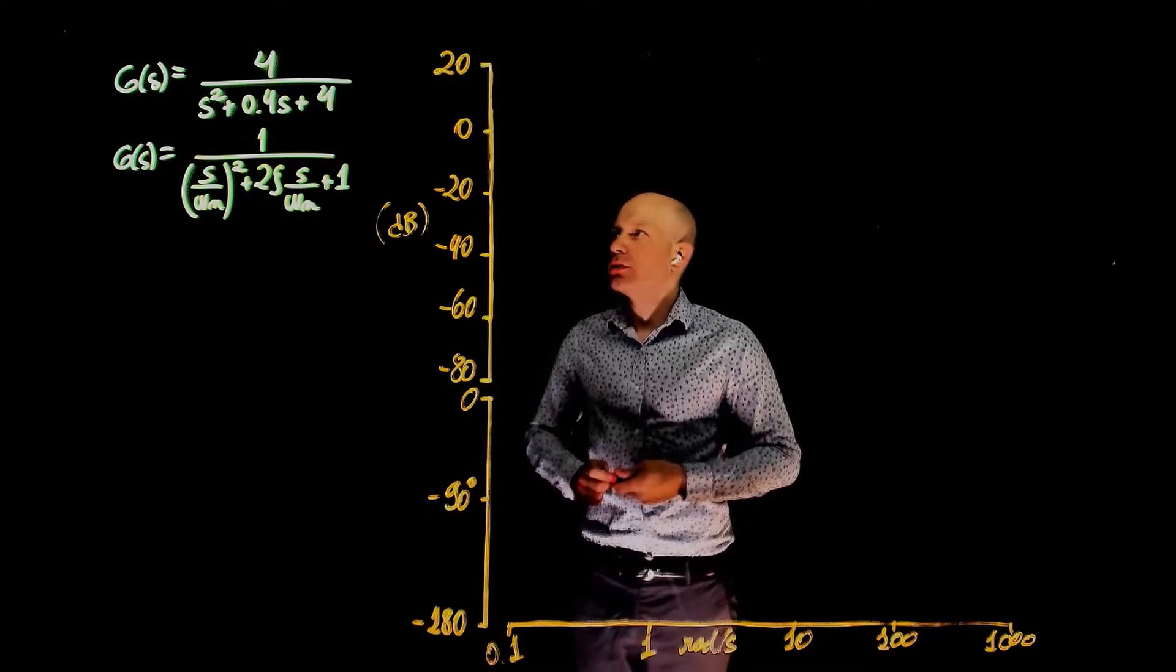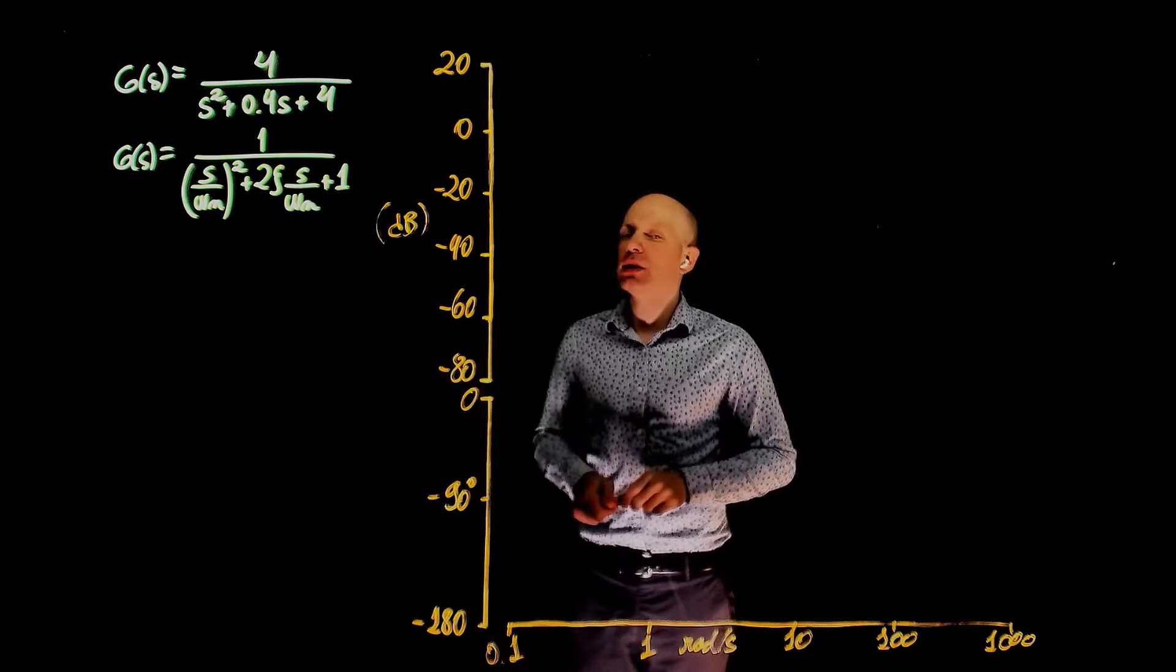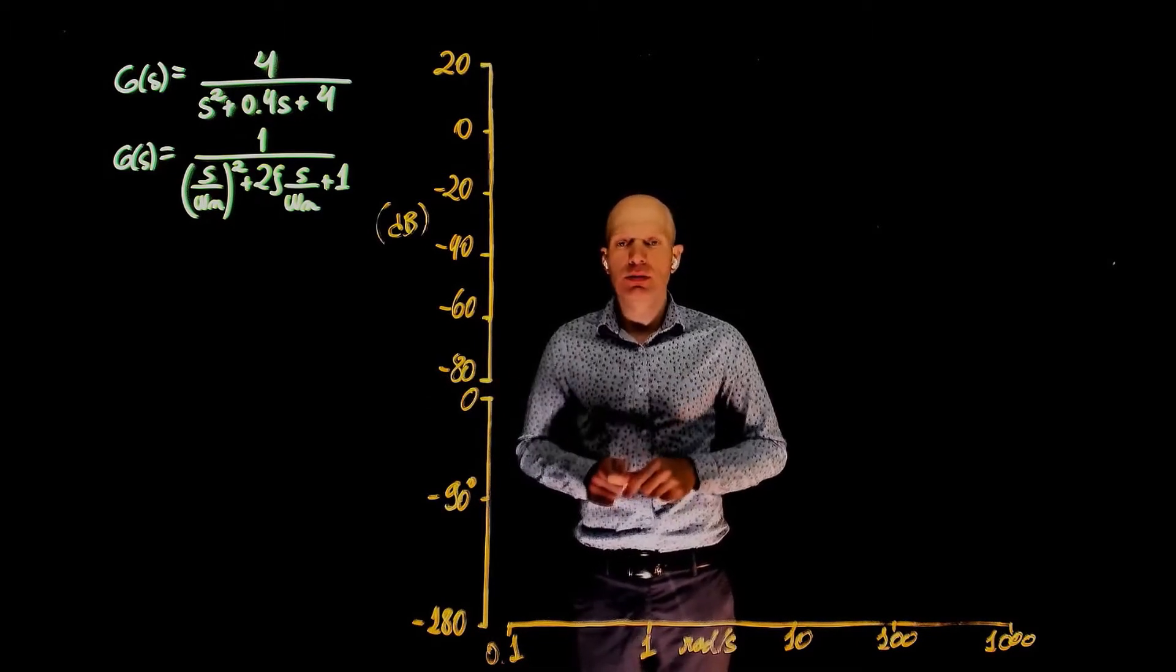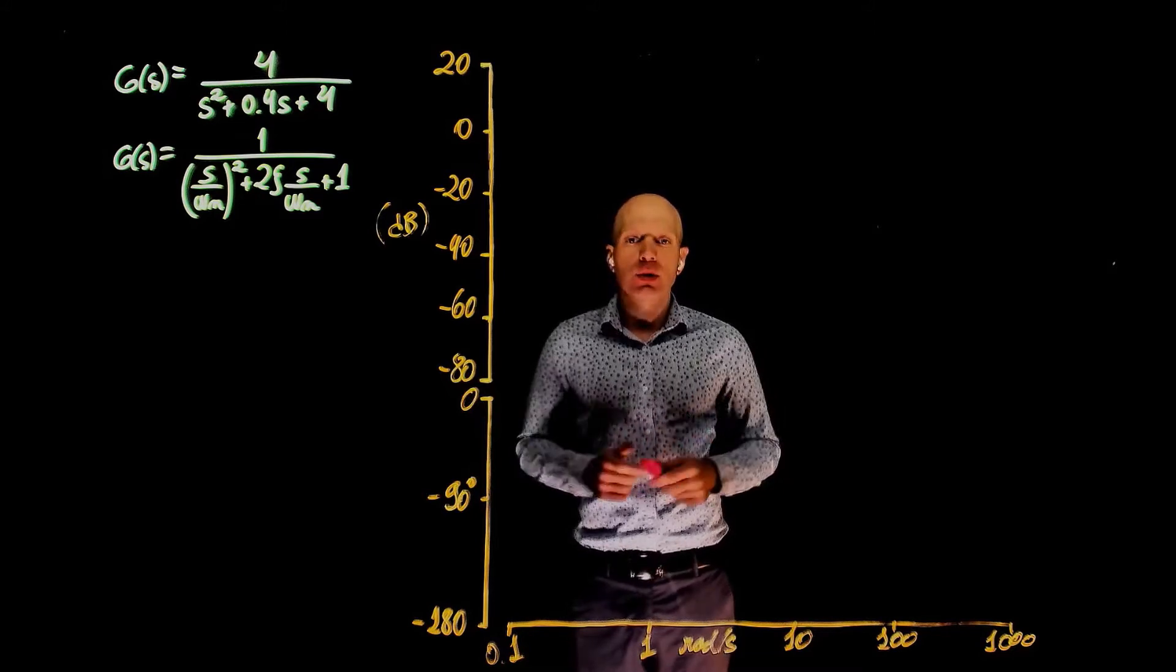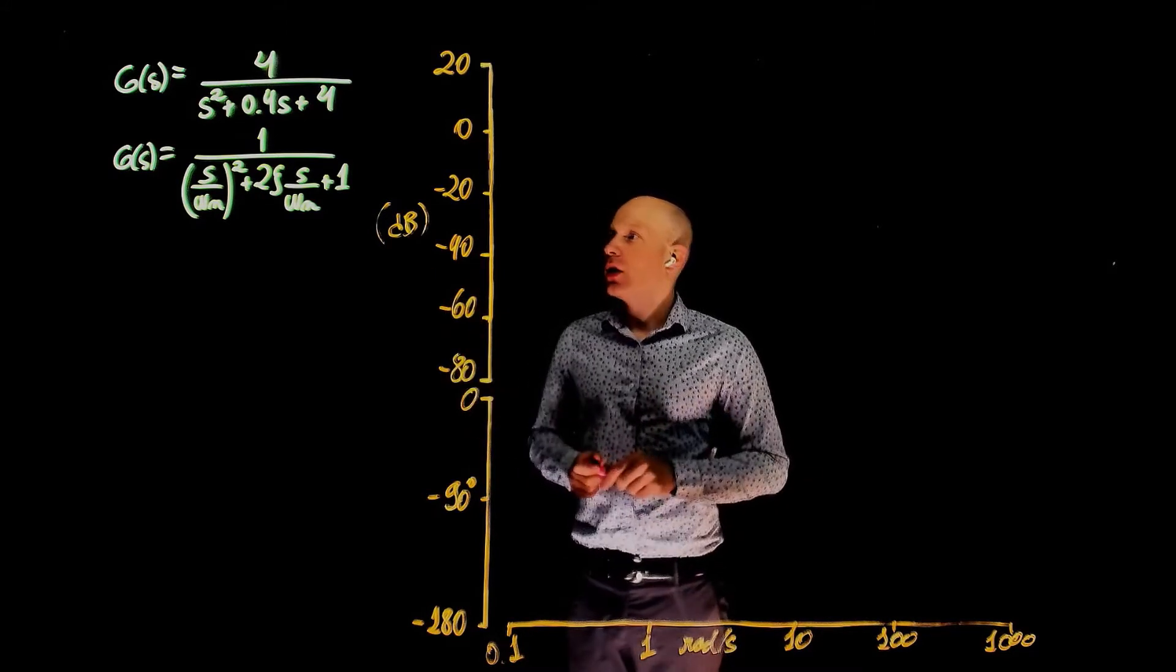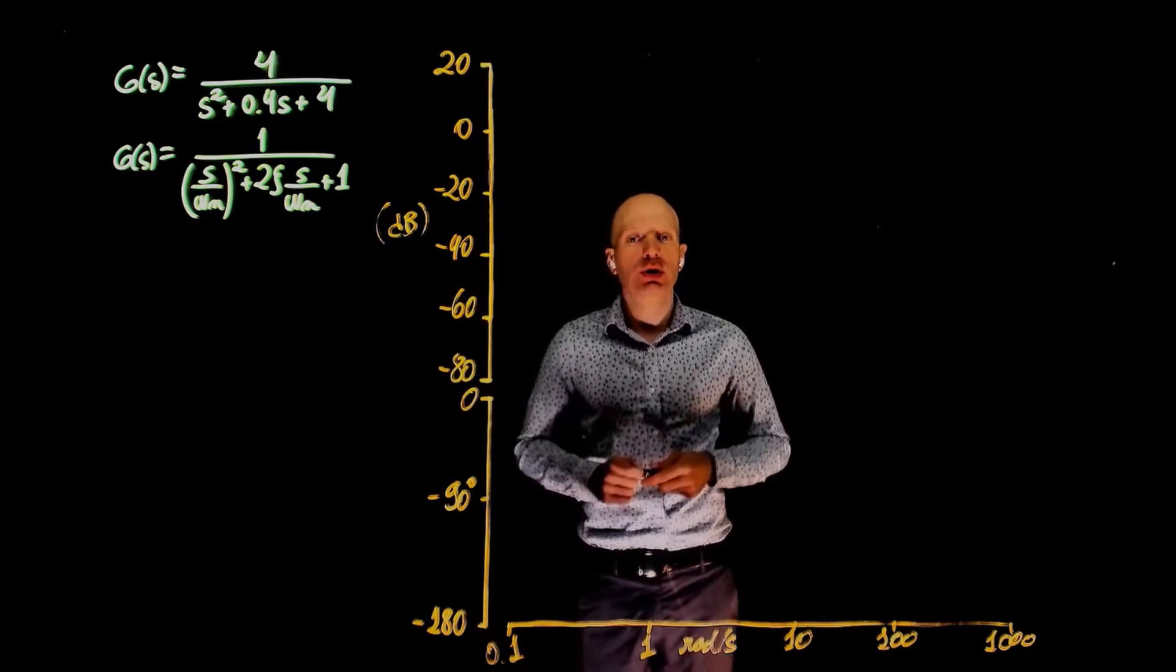In this example, we are going to draw the Bode plot of function G of s. You'll notice that the function G of s has a damping ratio of less than 1, which means that this is an underdamped system. Because the damping ratio is less than 1, we have complex conjugate poles. Now that we have complex conjugate poles, we need to use the tools we learned in lecture 17.